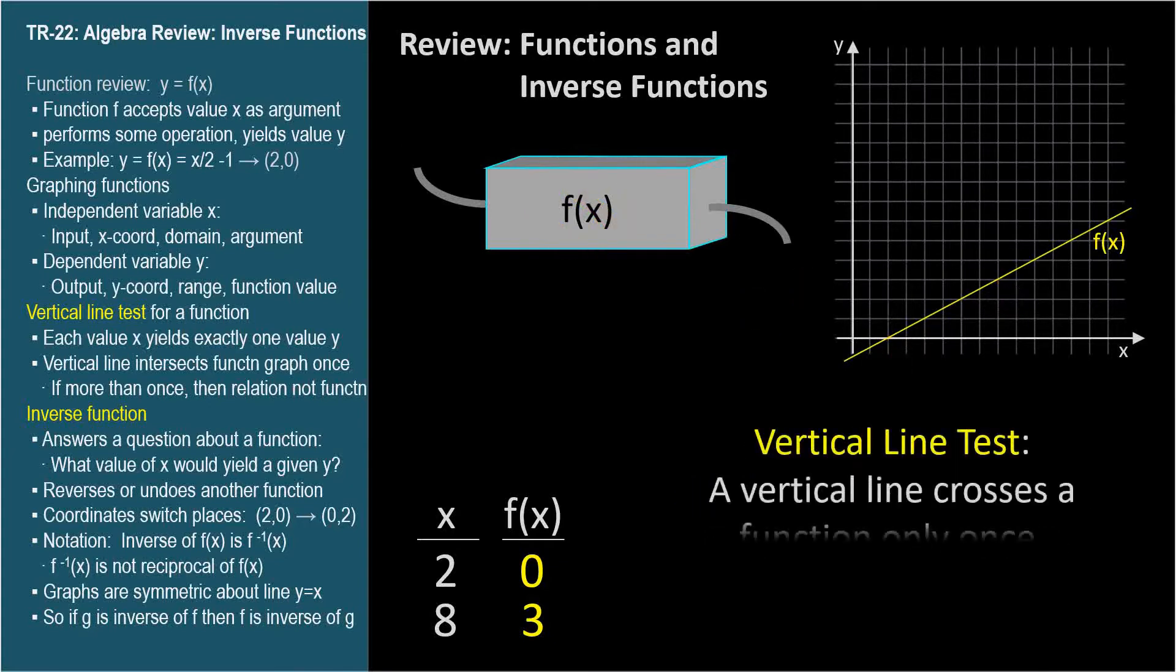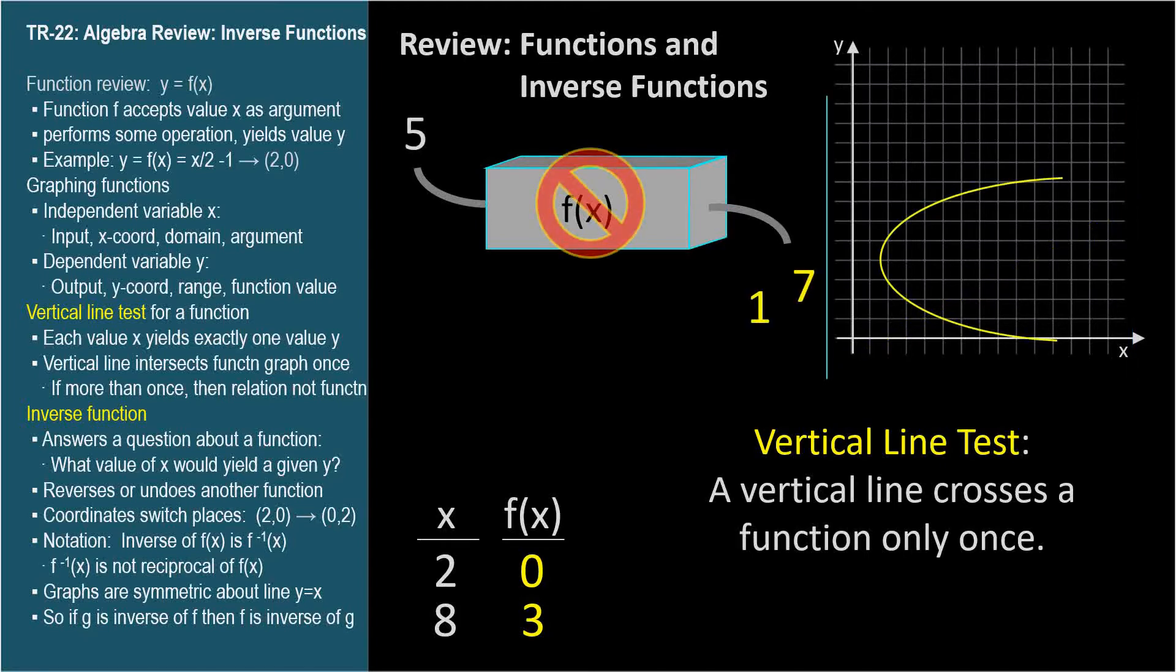Functions pass the vertical line test. A vertical line sweeping through the values in a function's domain will never intersect the function graph at more than one point. It may be clearer to show a counterexample. In this case, a vertical line intersects the graph at two points, so the graph is not the graph of a function. A function will always give you one y value for a particular x value.